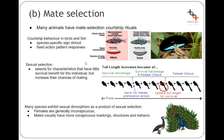In sexual selection, characteristics are selected for that don't necessarily give a survival advantage — it's not purely natural selection. They just make you more attractive and more likely to be able to mate. A good example is tail length in birds. Many species exhibit sexual dimorphism as a product of sexual selection, including female choice.